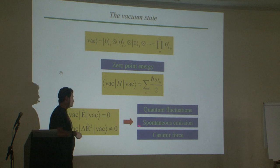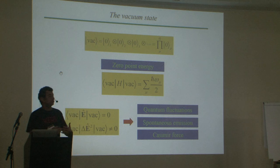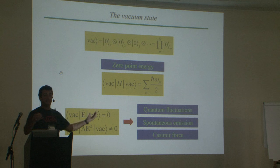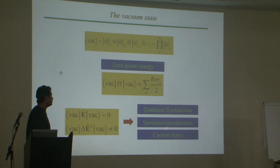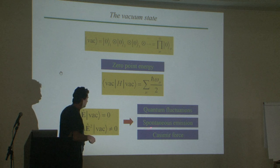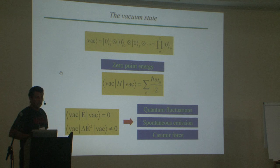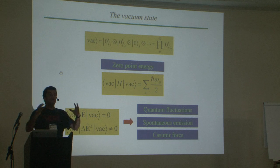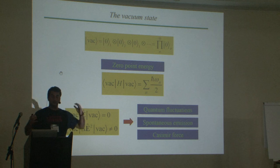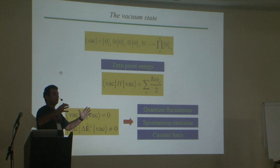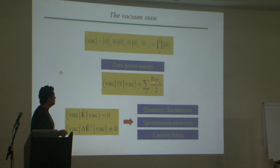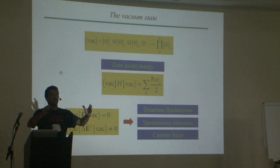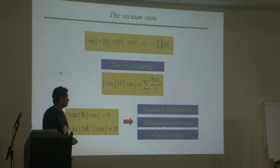These vacuum fluctuations give rise, for example, to spontaneous emission, as seen in the description of the interaction of a single atom with the electromagnetic reservoir, as Sabrina mentioned this morning. They also have another important effect: the so-called Casimir force. The Casimir force is important because it relates the zero-point energy to the boundary conditions constraining the modes. If you change the boundary conditions, the mode frequencies change, the vacuum energy changes, and associated with that energy change there must be a force.